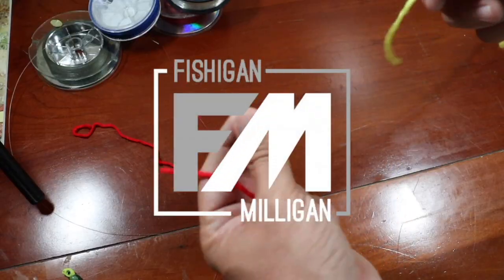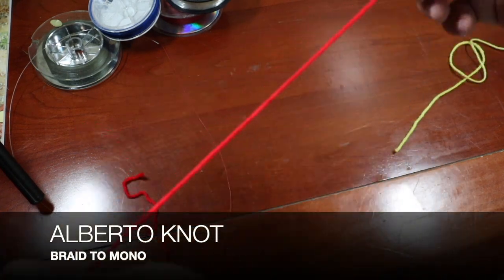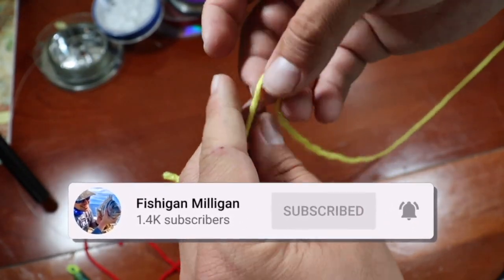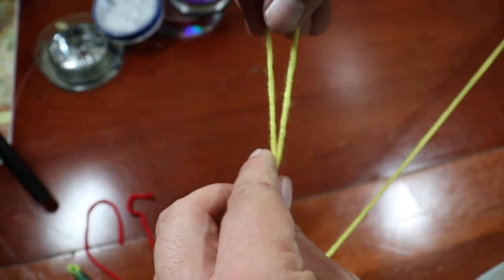So this is going to be your mono, and this is going to be your braid. If you want to tie it together, what you do is you get your mono, and you're going to loop it like that.